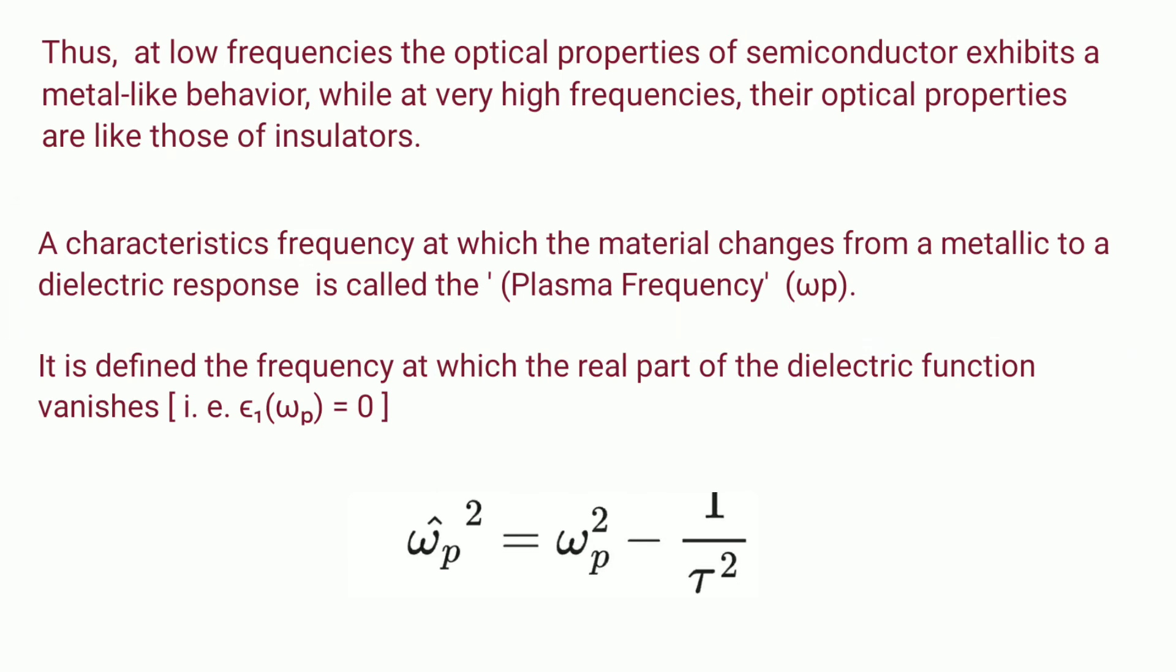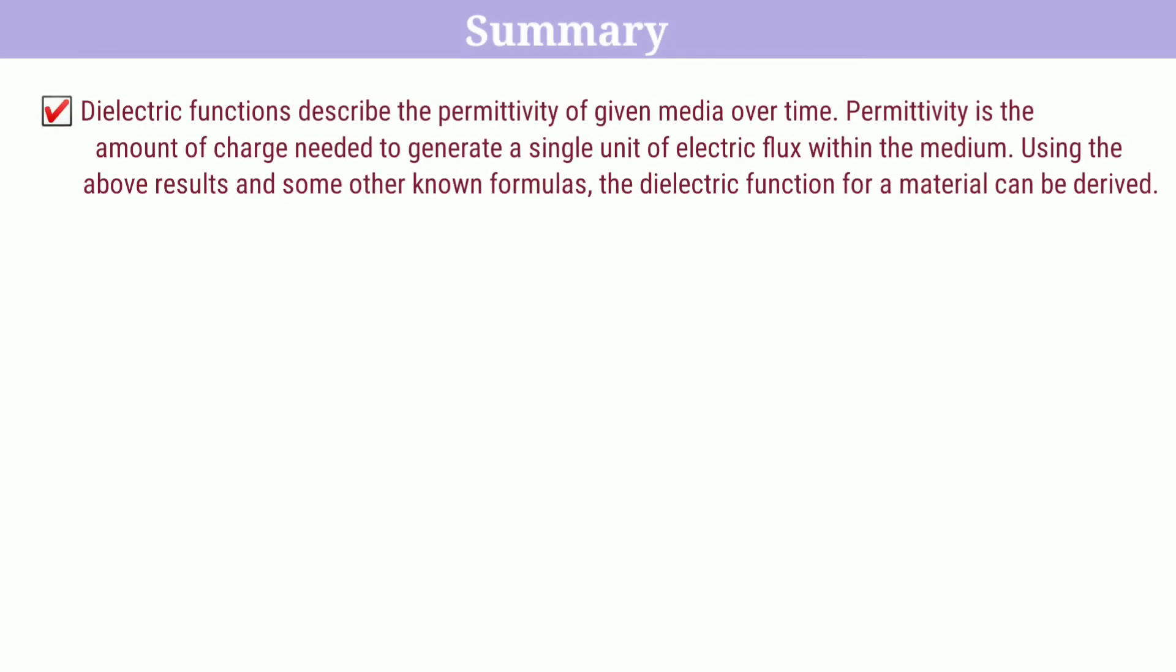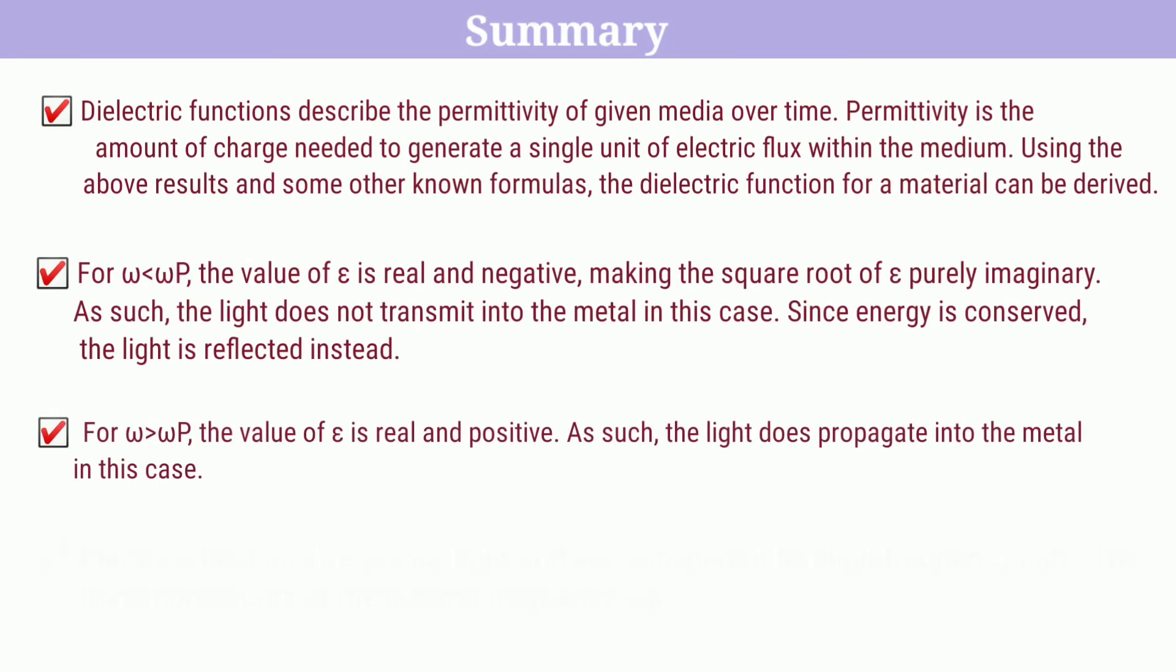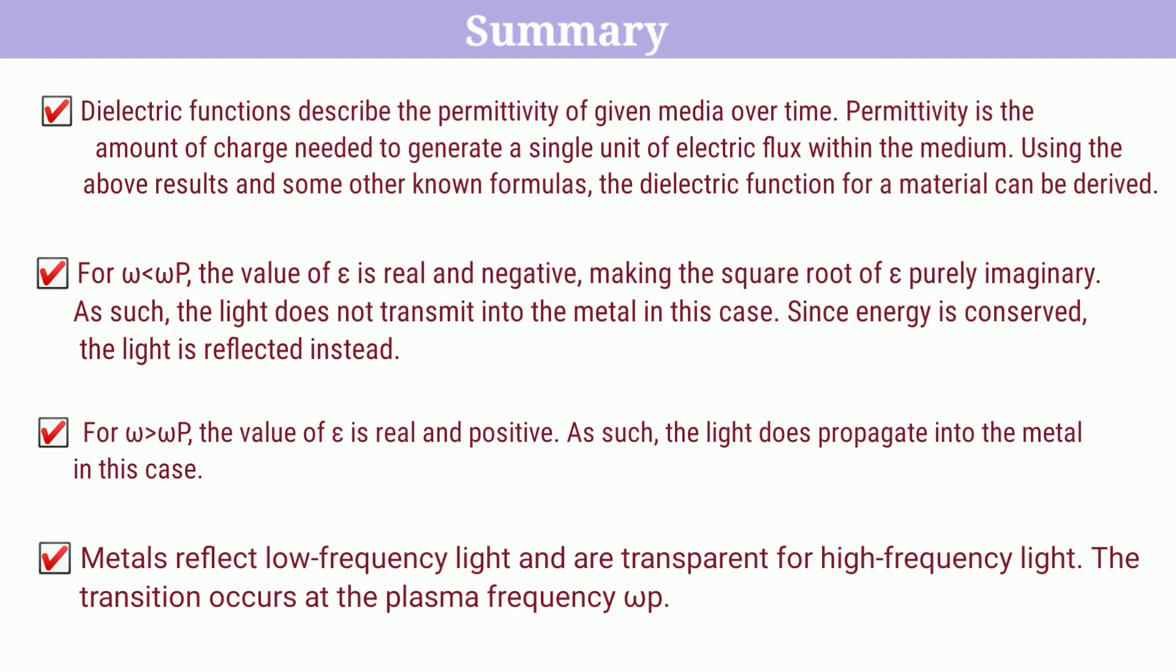It is defined as the frequency at which the real part of the dielectric function vanishes, that is ε₁(ω_p) = 0. So ω_p'² = ω_p² - 1/τ². Let us now summarize the points of the Drude model. Dielectric function describes the permittivity of given media over time. Permittivity is the amount of charge needed to generate a single unit of electric flux within the medium. Using the above results and known formulas, the dielectric function for a material can be derived.